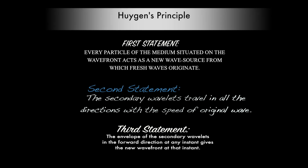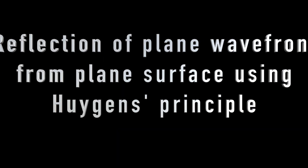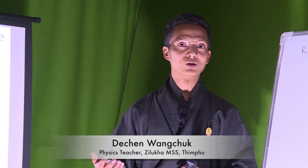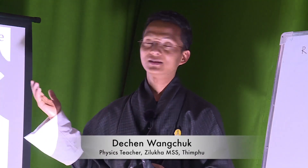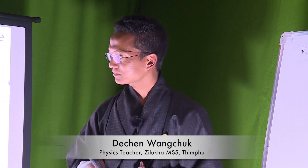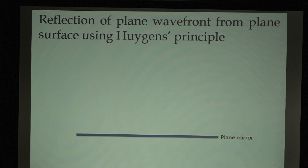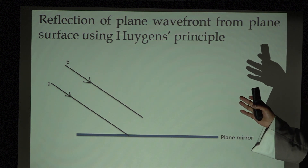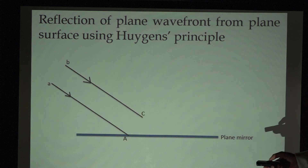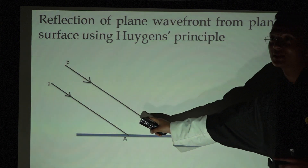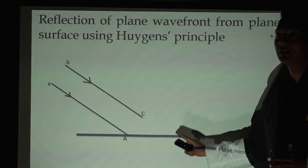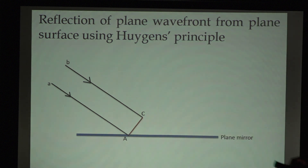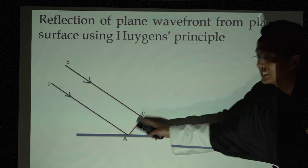Based on this, we will now look at the process of reflection and refraction of light. First, let us look at reflection of a plane wavefront from a plane surface using Huygens Principle — we are going to prove the law of reflection. Let us assume this line as a plane mirror. Two rays are coming parallel to each other. When ray A reaches point A, ray B reaches only at point C, meaning these two rays are not touching the same plane mirror at the same time. If we draw a perpendicular line which cuts these two rays, that is our wavefront — the red line here indicates the wavefront.